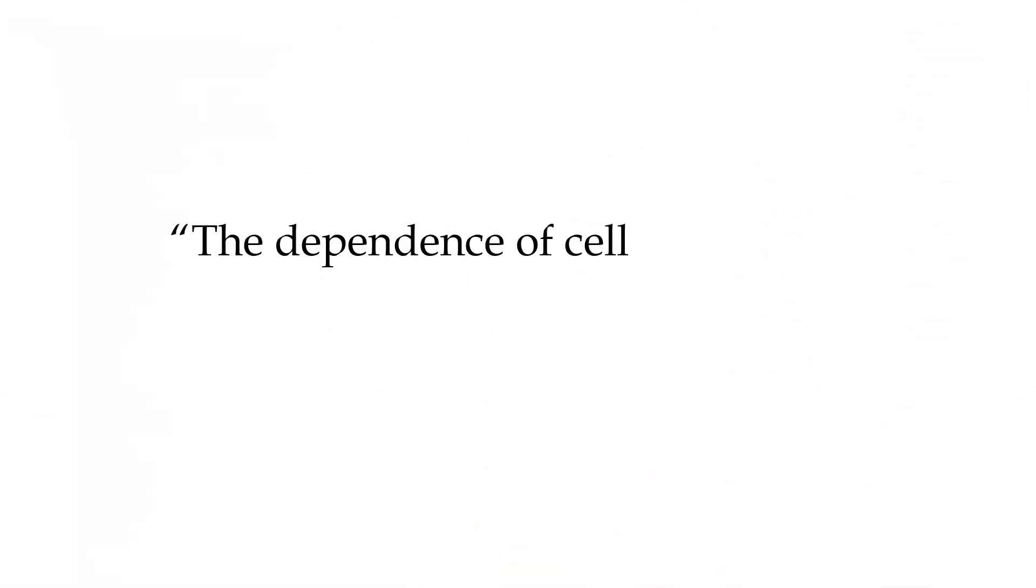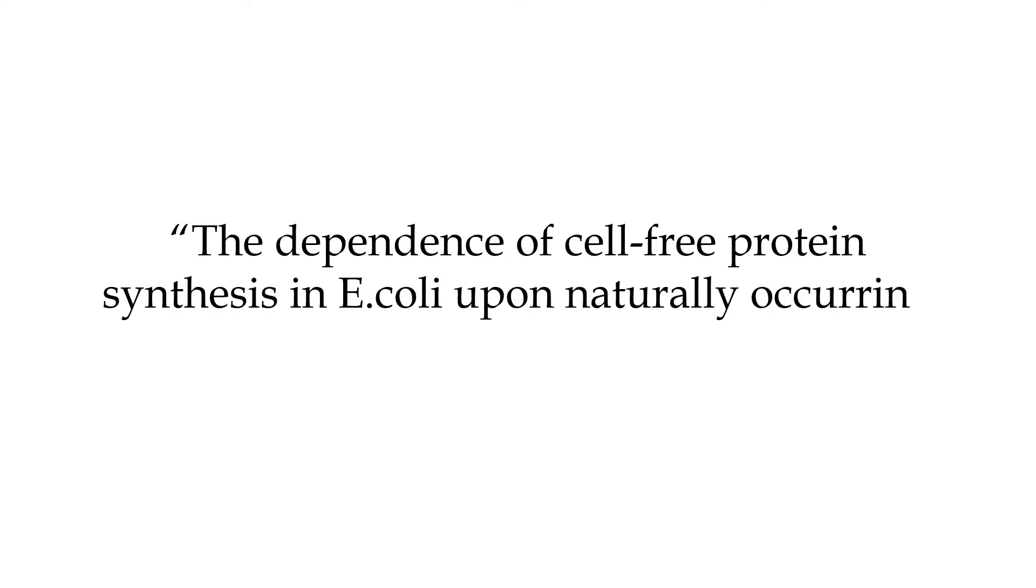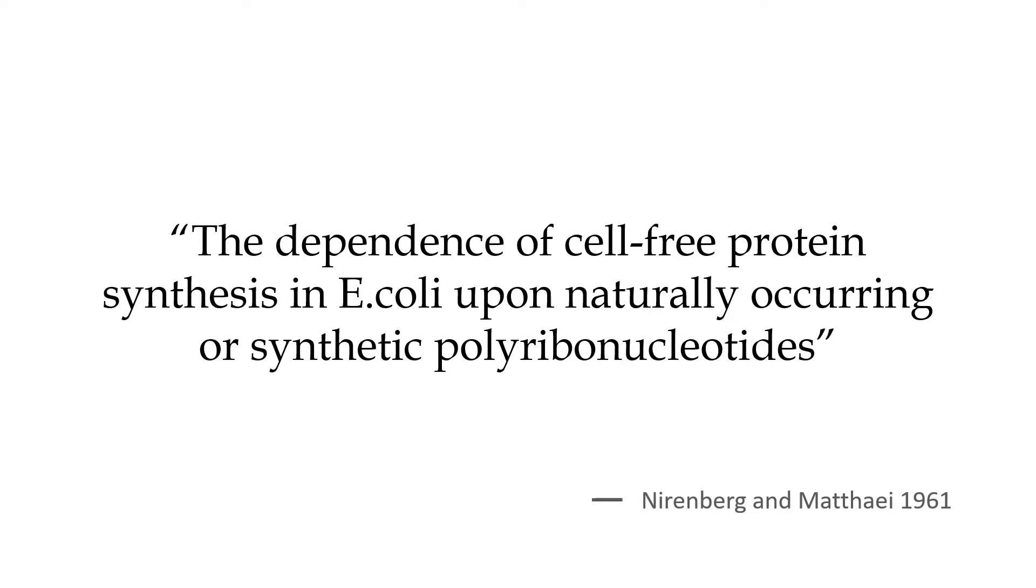The cracking of the genetic code was a team effort, but Nirenberg and Matai's 1961 paper, The Dependence of Cell-Free Protein Synthesis in E. coli upon naturally occurring or synthetic polyribonucleotides, was the first step in cracking the genetic code.